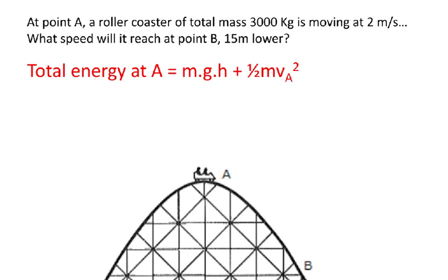Well first let's think about the total energy at A. It's the sum of the gravitational potential energy, which is mgh, plus the kinetic energy, which is half mvₐ squared, the velocity at A.